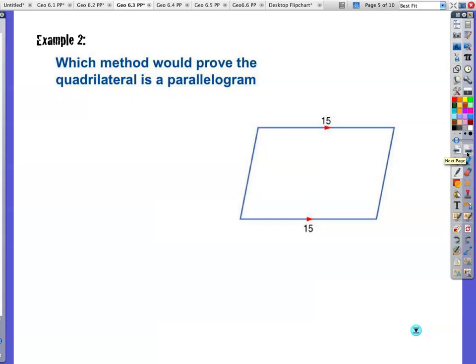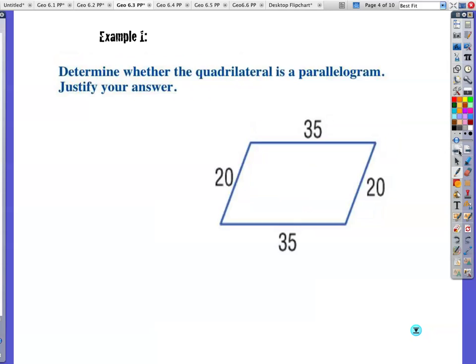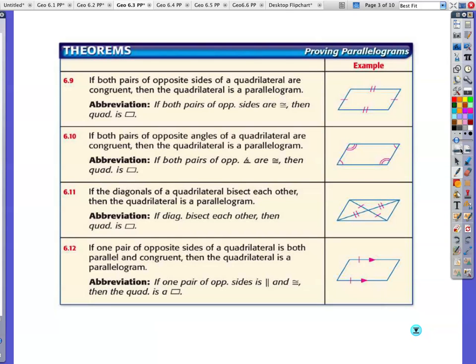Example two. Which method would prove that the quadrilateral is a parallelogram? Well, I can't help but notice opposite sides are, one pair at least, is congruent and parallel. So I'm going to go back just so you can see this. Oh, yeah, opposite sides, congruent and parallel. Then I have a parallelogram.